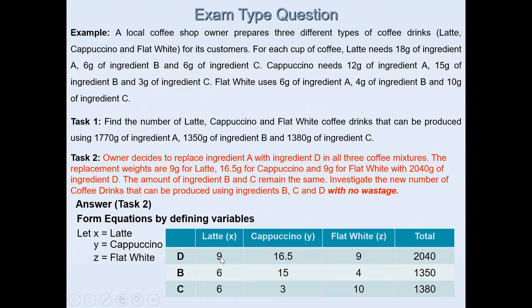The replacement weights are 9, 16.5, and 9 with a total of 2,040. So these bits are new now. That's the new equation. Then it says ingredients B and C remain the same, so these remain the same. And now it's easier for us to form the equation. The table really helps. Otherwise, you'll be reading lots of information here and there's a high chance of picking the wrong value. So please always double check.